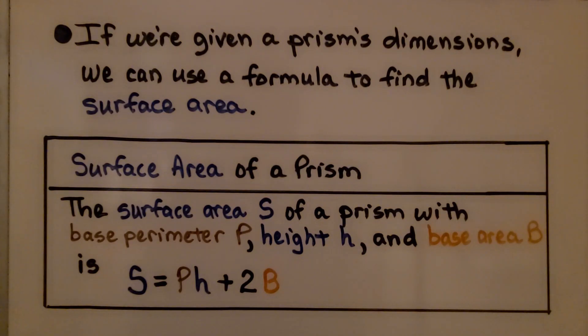If we're given a prism's dimensions, we can use a formula to find the surface area. The surface area S of a prism with a base perimeter P, height H, and the base area B would be S equals P times H plus 2 times B.